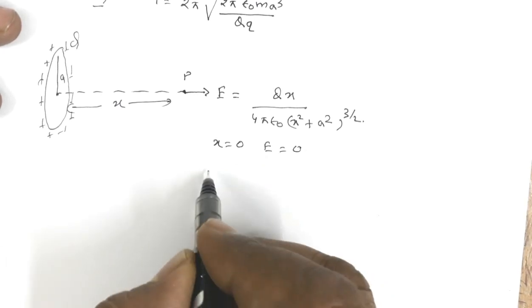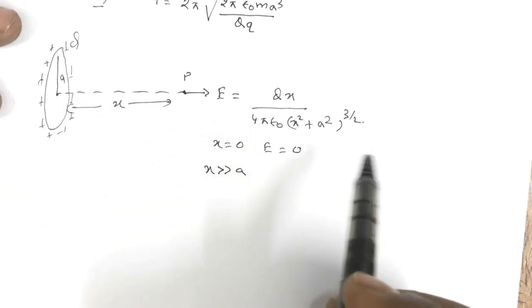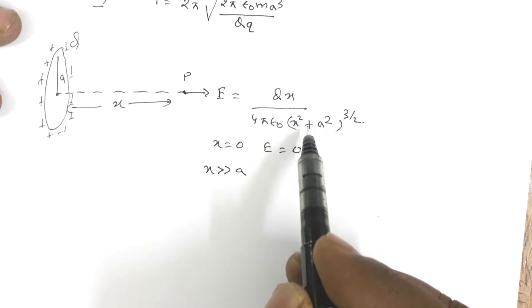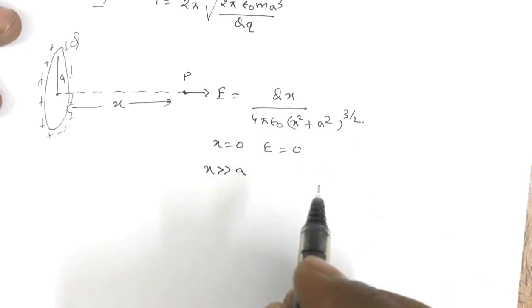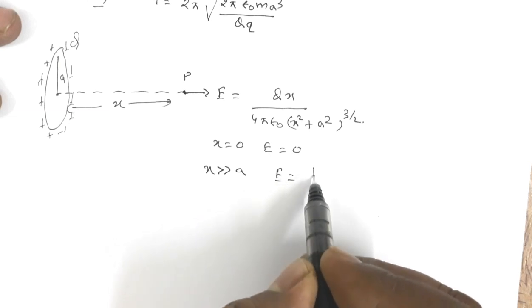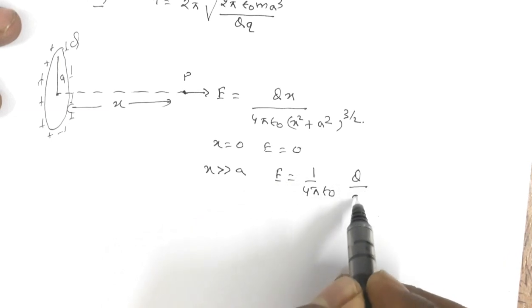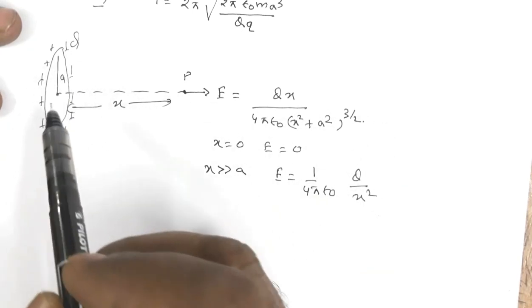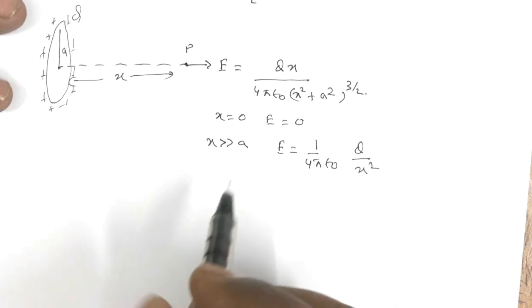Now if x >> a — when you are far away from the ring — then (x² + a²)^(3/2) becomes x³. The x cancels out, so E = (1/4πε₀) × Q/x². When you are far away from the ring, the ring will behave like a point charge.